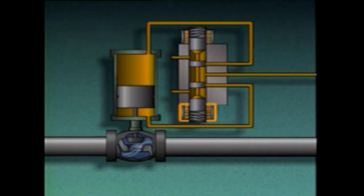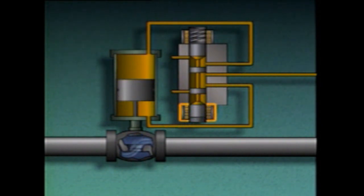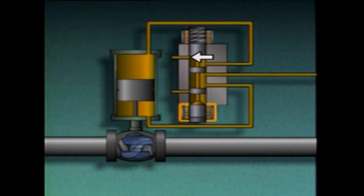When the lower solenoid is energized, the spool is pulled downward. With the spool in this position, hydraulic fluid is supplied through this line to the actuator. The fluid enters the actuator's cylinder at the bottom, pushing the piston up and opening the valve. At the same time, fluid is forced out of the top of the cylinder through this line, back through the pilot valve, and out through the vent port, back to the hydraulic fluid supply.